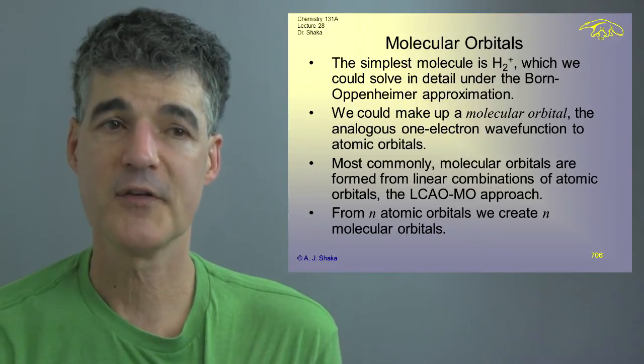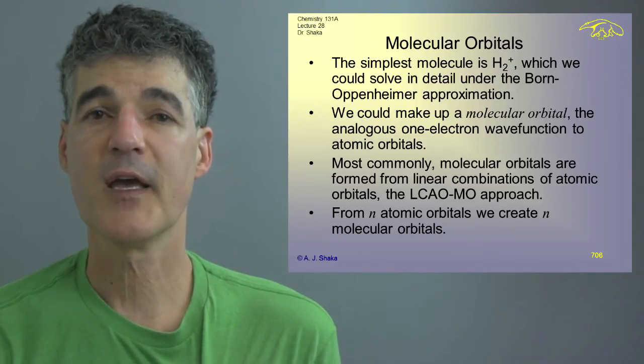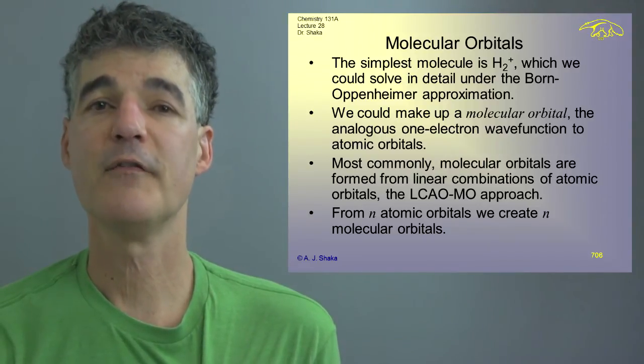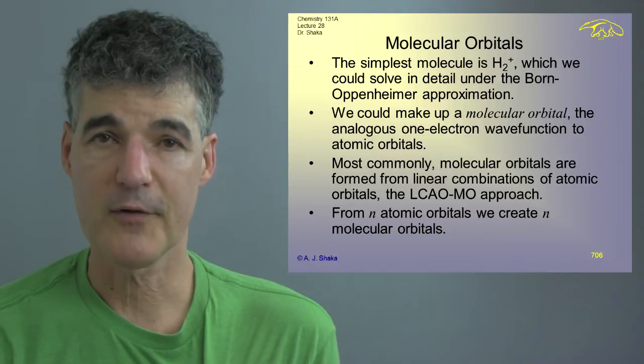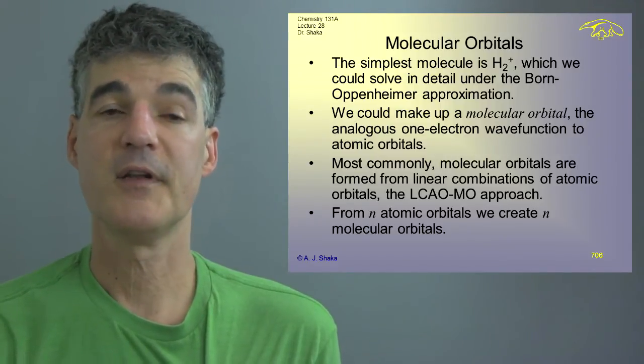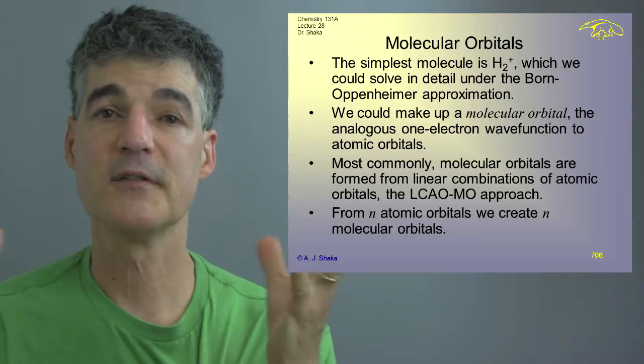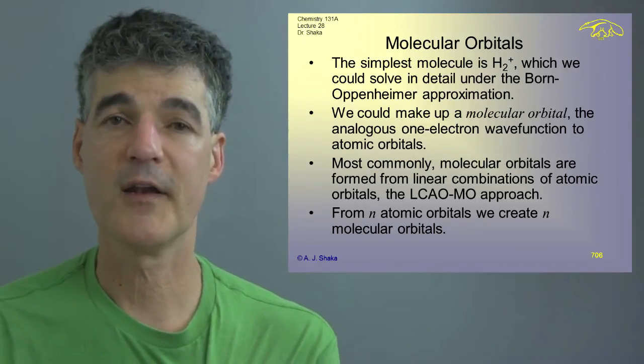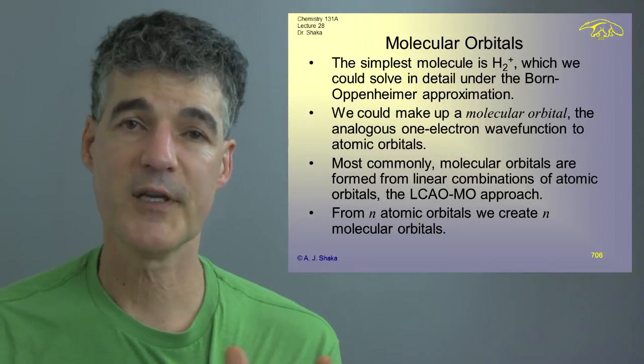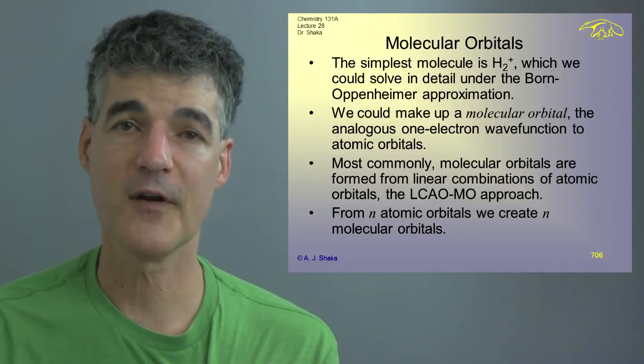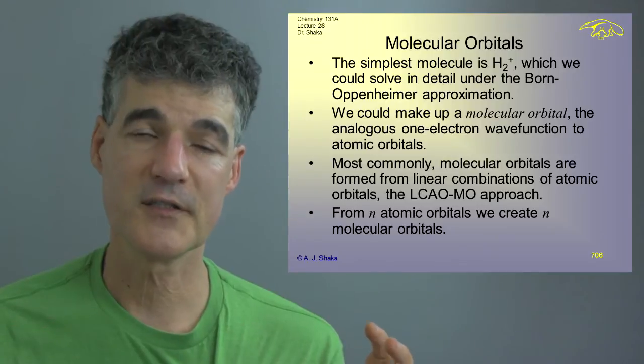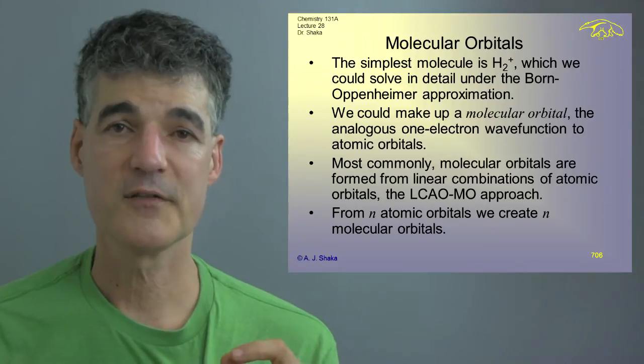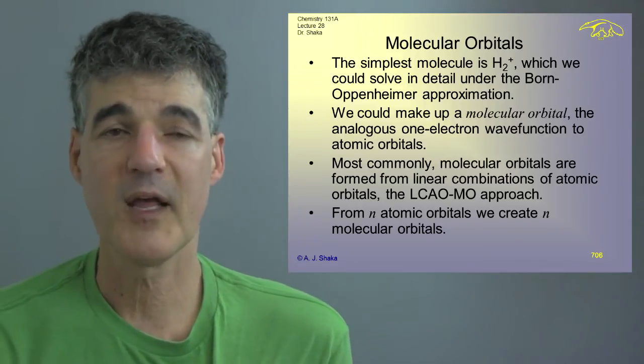The simplest molecule is H2 plus which we did in some detail and we could solve that under the Born-Oppenheimer approximation and we decided we could make up a molecular orbital which was the analogous one electron wave function to an atomic orbital. Except instead of just having one nucleus and solving one electron at a time, we have two nuclei and we solve one electron at a time. Well, H2 plus we can solve because it's only one electron. The fact that the nucleus has split apart isn't that big a deal. It makes the math worse but it doesn't change things in any other fundamental way.